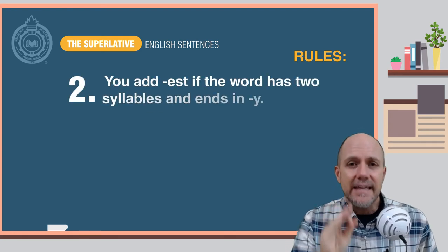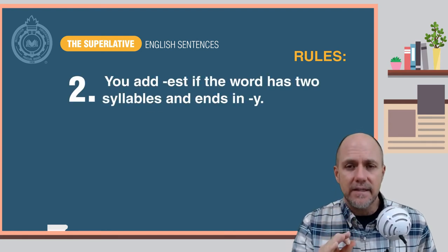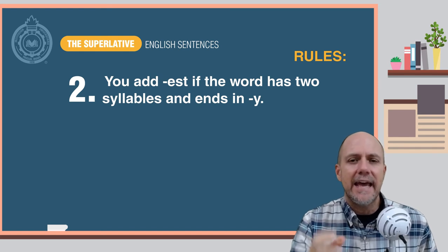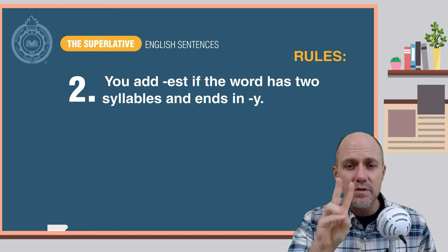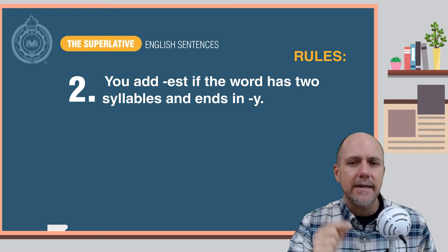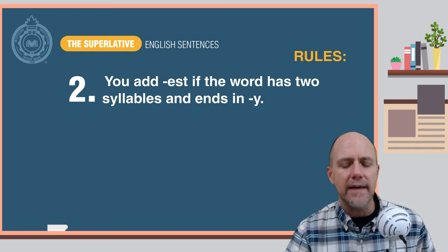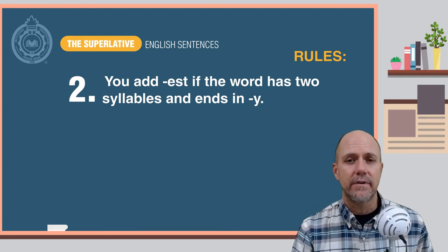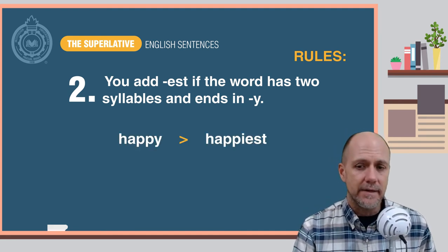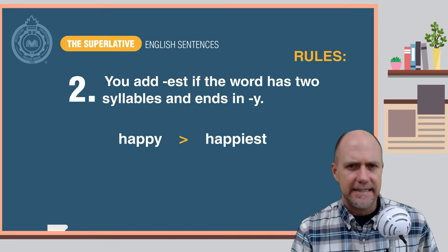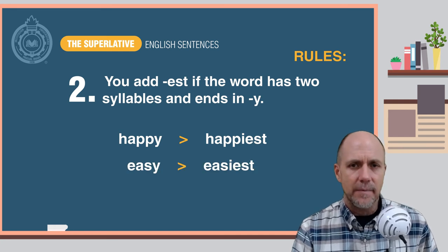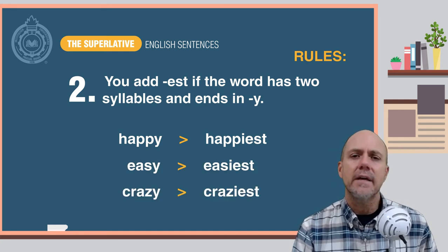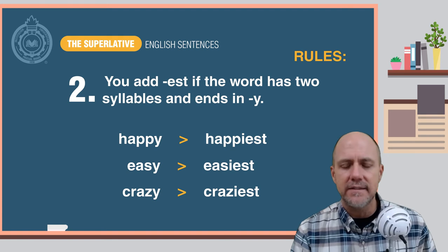Rule number two: you add -est to the end of the adjective if it has two syllables and ends in -y. Here are some examples: happy becomes happiest, easy becomes easiest, crazy becomes craziest.